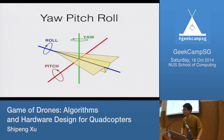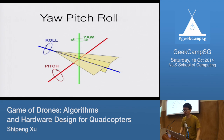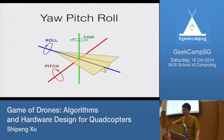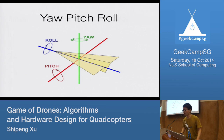Before we get started, I need to describe some terms used frequently. To describe rotations there are three axes. Rotation like this we call Yaw. Rotation like this we call Pitch. And rotation like this we call Roll. So Yaw, Pitch, Roll — these are the three terms we'll use frequently in this talk.